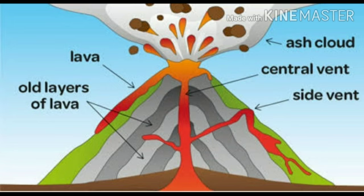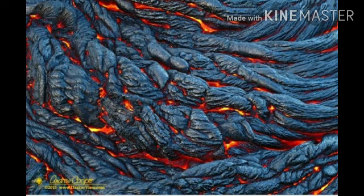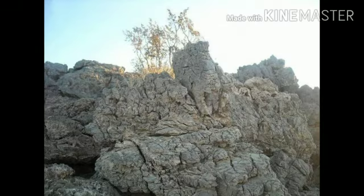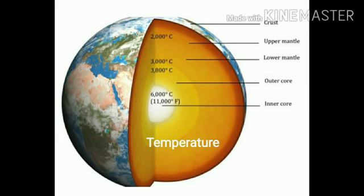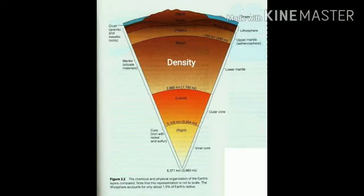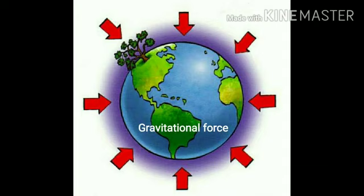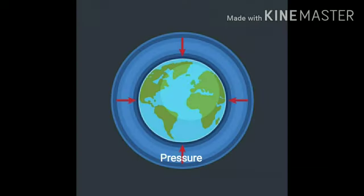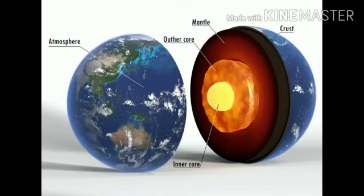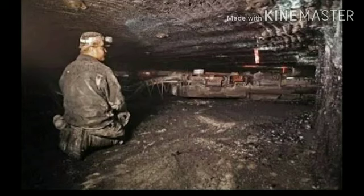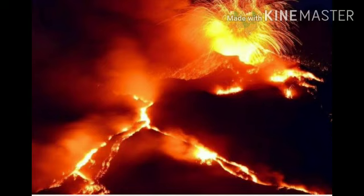The matter coming out of volcanic eruptions consists of hot magma, gases, steam, etc. When lava cools and solidifies, igneous rocks are formed. Through estimates of the study of temperature, density, gravitational force, and pressure, the interior of the earth was understood.